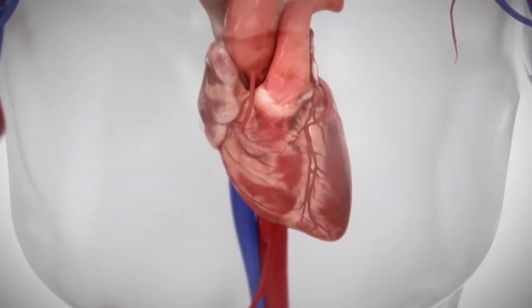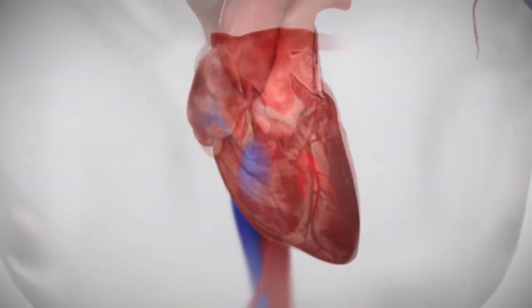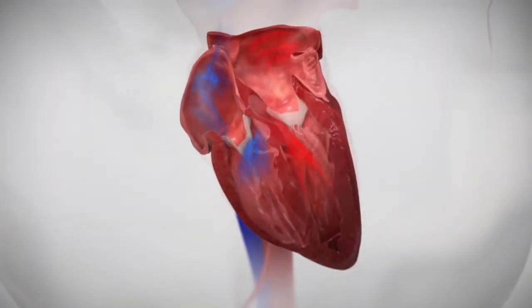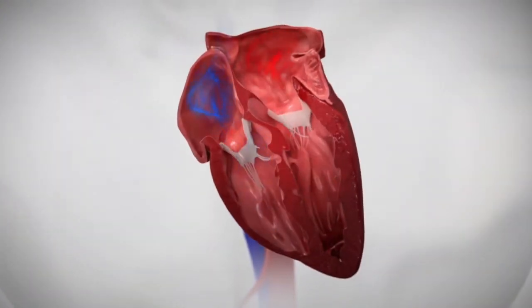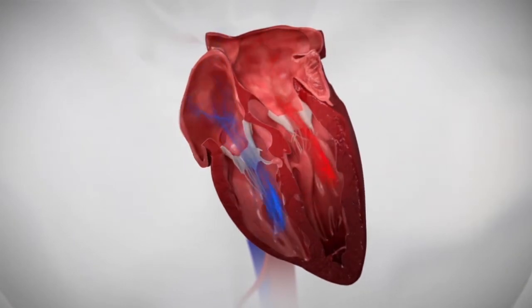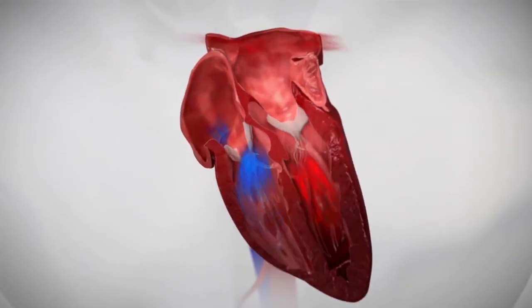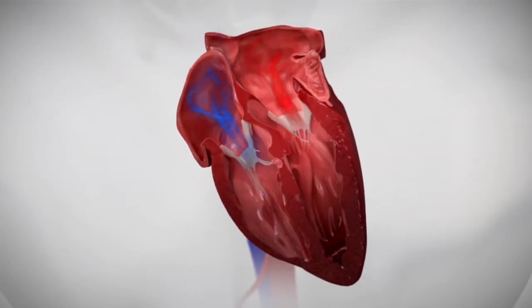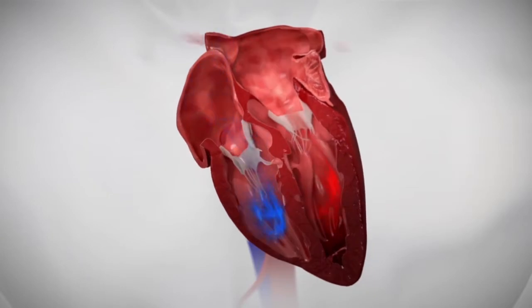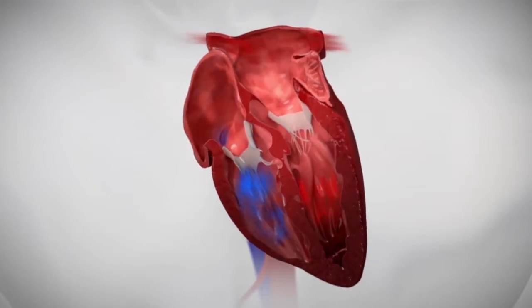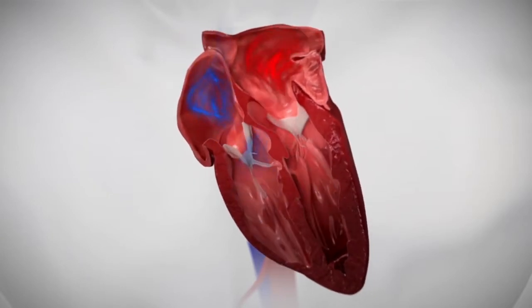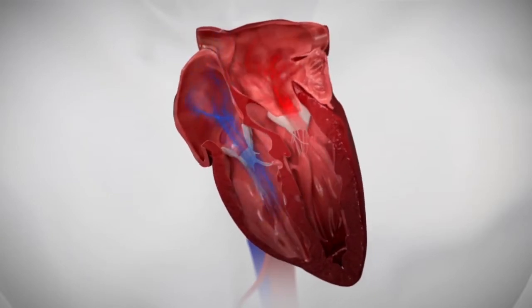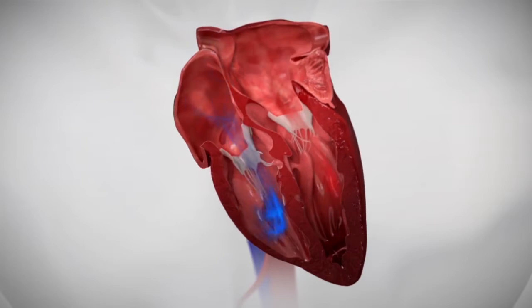Diastolic heart failure is a condition that occurs when the muscles of the heart are not able to relax normally and do not allow blood to flow easily in the lower left chamber. As a result, the upper left chamber may not fill easily with blood coming from the lungs, causing an increase in pressure.